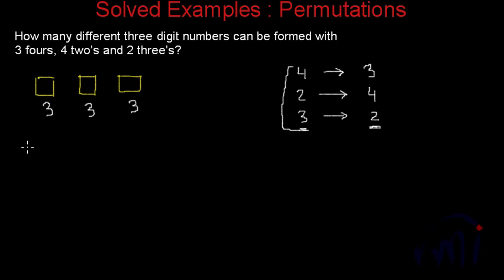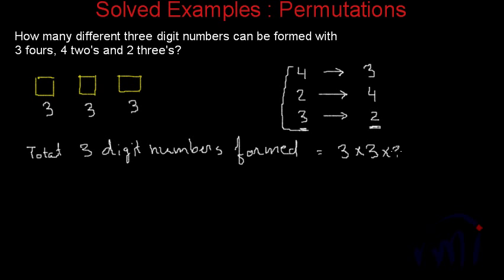So as per this logic, the total three-digit numbers formed using these three digits will actually be equal to three multiplied by three multiplied by three, which is twenty-seven. Till here, it is very simple.